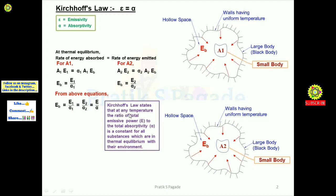From this equation we can conclude that Kirchhoff's Law states that at any temperature the ratio of total emissive power e to total absorptivity alpha is constant for all substances which are in thermal equilibrium with their environment. In both cases, for both bodies, the bodies are in thermal equilibrium with the large body or black body. Now, eb = e / alpha can be rewritten as alpha = e / eb — that is, absorptivity equals emissive power of any body divided by emissive power of the black body.